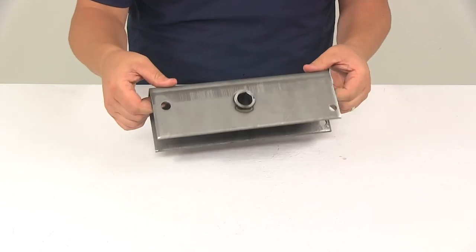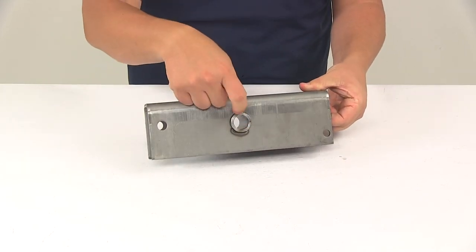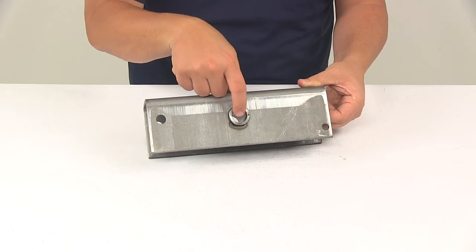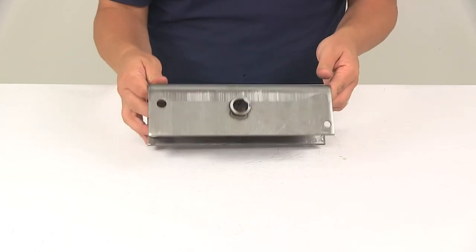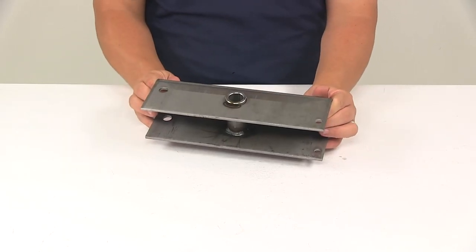It does not include a center bushing. You can see here that that's just steel right there so no center bushing. Again, this is designed for a two inch wide slipper spring.